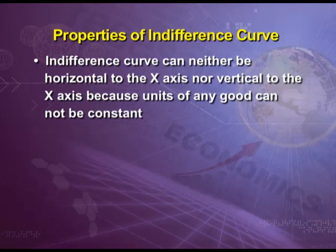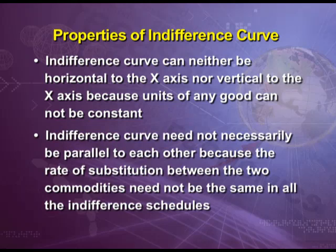Next property: indifference curve can be neither horizontal to the x-axis nor vertical to the x-axis because units of any good cannot be constant. Next property: indifference curves need not necessarily be parallel to each other because the rate of substitution between the two commodities need not be the same in all the indifference schedules.